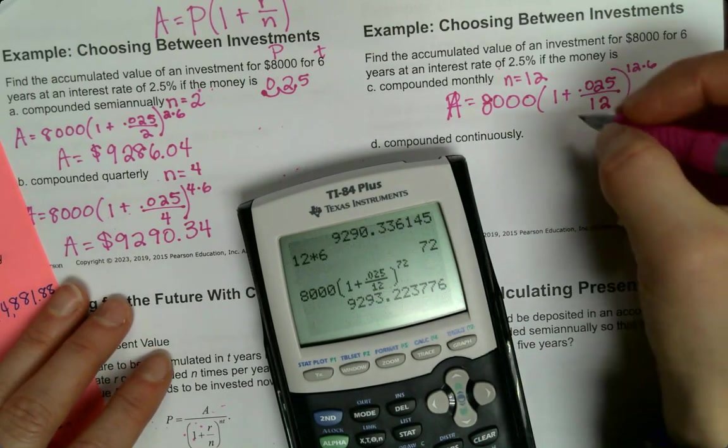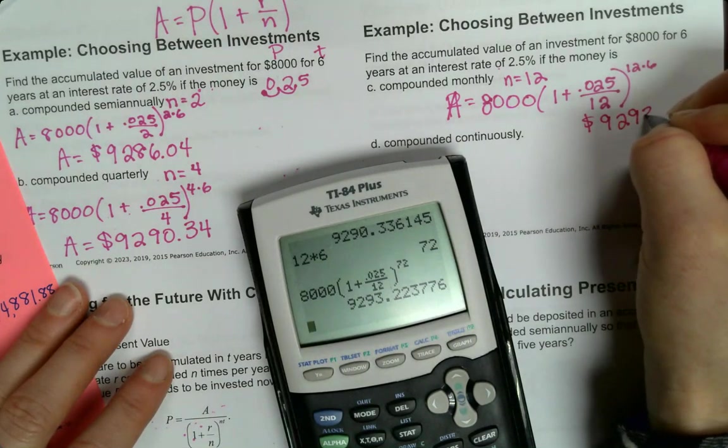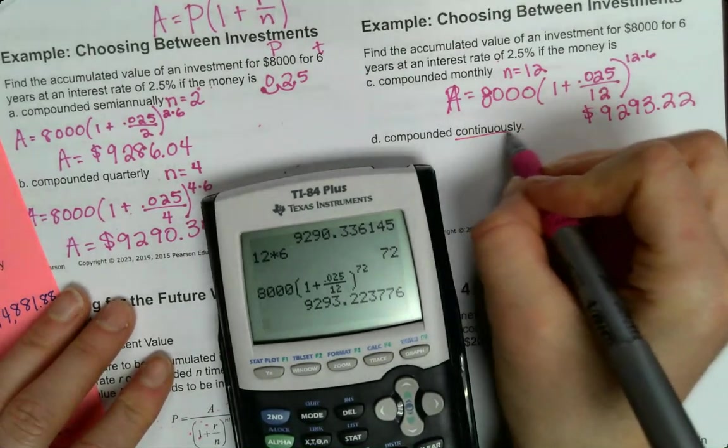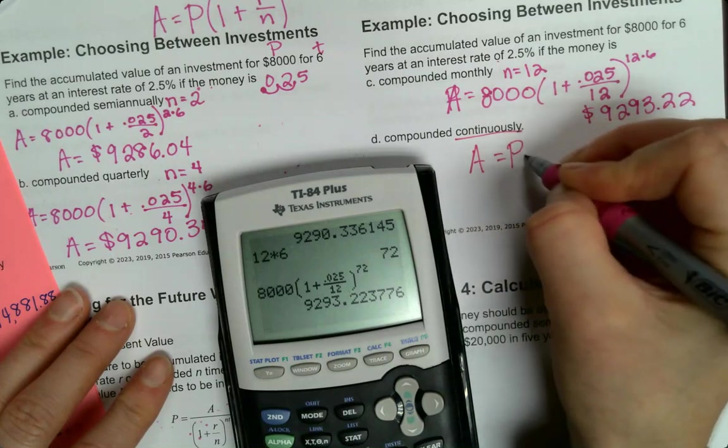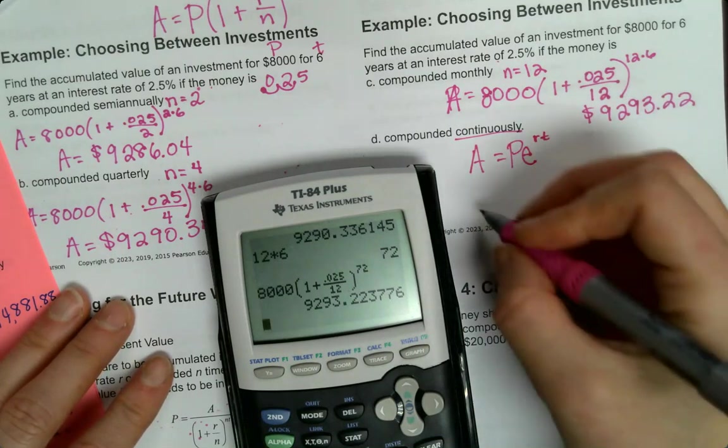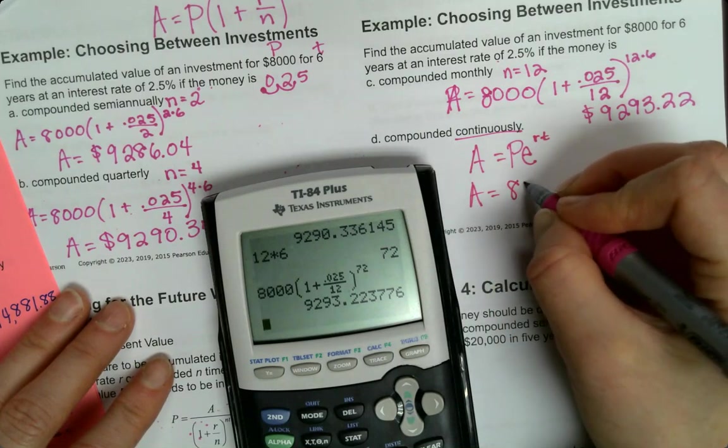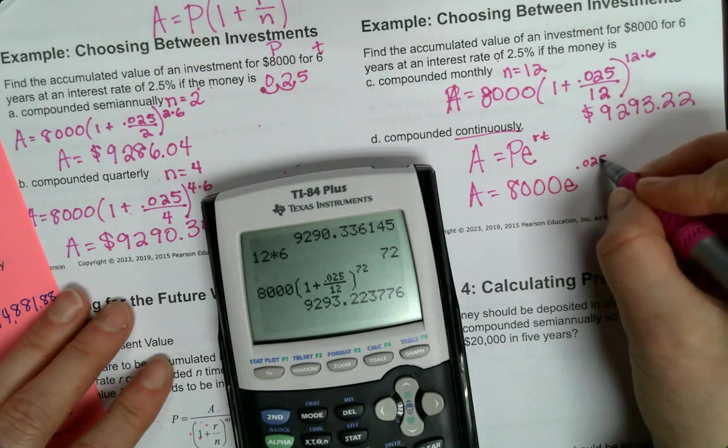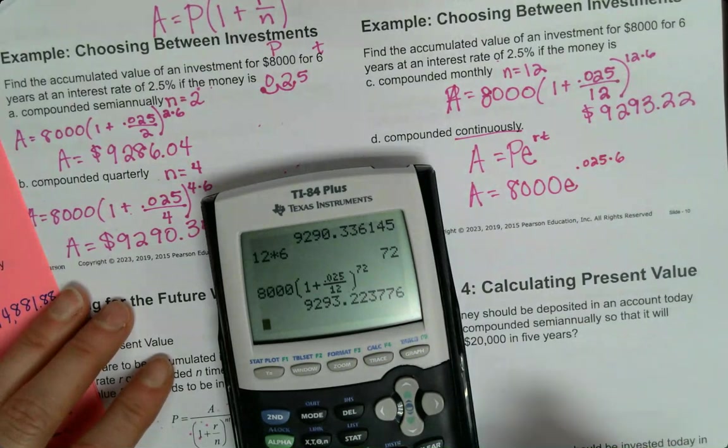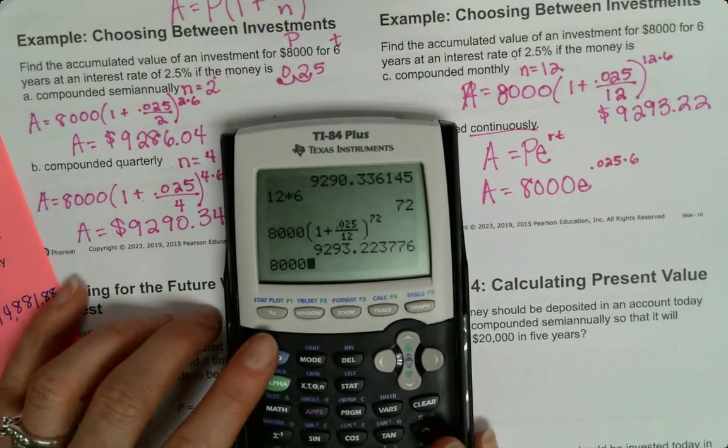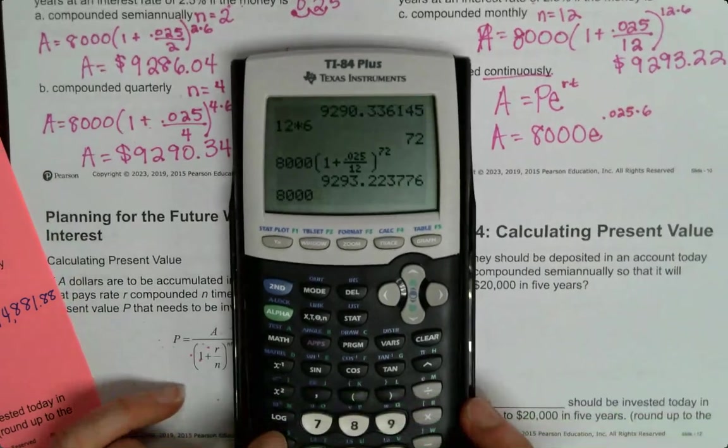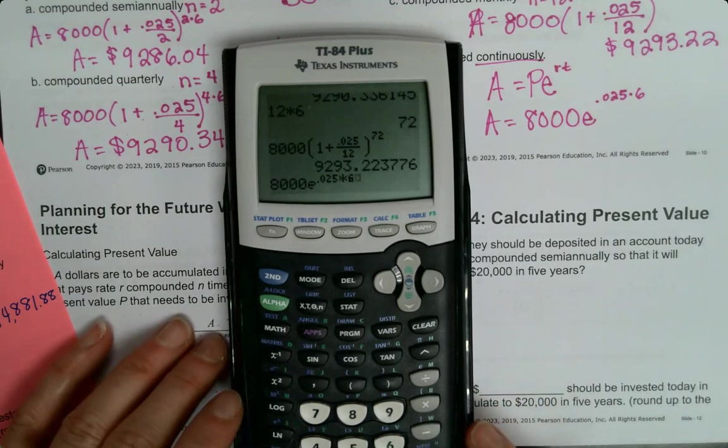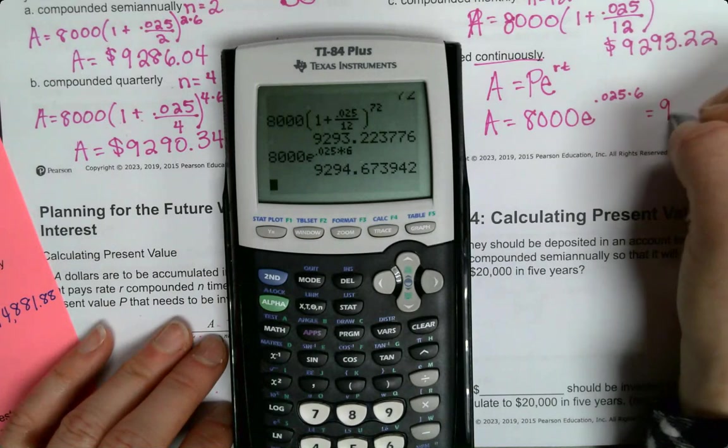And 12 times 6 is 72. And then the last one is compounded continuously so that's that other formula, A = Pe^(rt). P is 8,000, e to the rate 0.025 times 6.